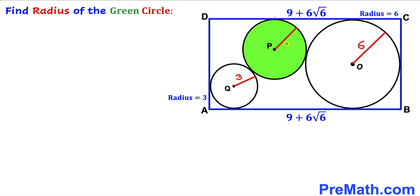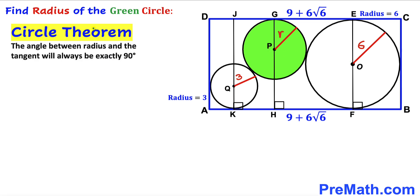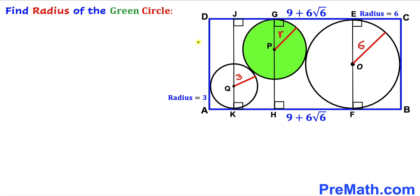Let's assume the radius of the green shaded circle is lowercase r. I have dropped perpendiculars EF, GH, and JK passing through centers O, P, and Q respectively. Recalling the circle theorem: the angle between the radius and the tangent line is always 90 degrees, so all these angles are 90 degrees, since these are our radii and these are our tangent lines. The angles of rectangle ABCD are also 90 degrees.